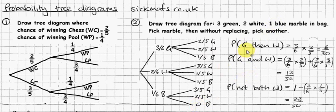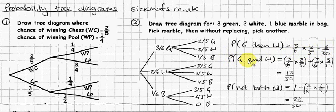What's the probability of getting a green then a white? That's 3/6 times 2/5, which equals 6/30. Three times two is six, six times five is thirty — just in case you forgot how to multiply fractions.